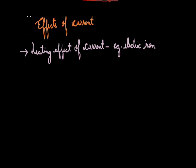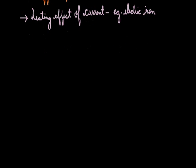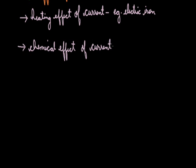This was the domestic example which we can see in our daily life. Our next effect to discuss is the chemical effect of current. In the chemical effect of current, we come across a process known as electroplating. It is a process which is completely based on the reactivity of metals, and it is defined as the coating of one metal on the surface of another metal based on their reactivity.